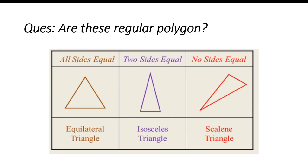Children, here your question is: are these regular polygons or irregular polygons? This is an equilateral triangle, so this is a regular polygon. This is an isosceles triangle — in an isosceles triangle only two sides are equal, so it is an irregular polygon. And in a scalene triangle all sides are of different lengths, so this is again an irregular polygon.